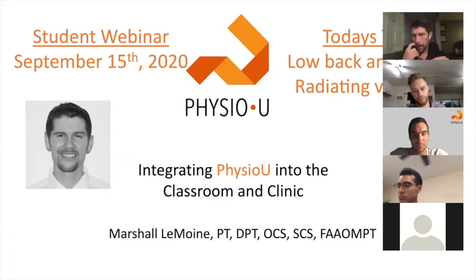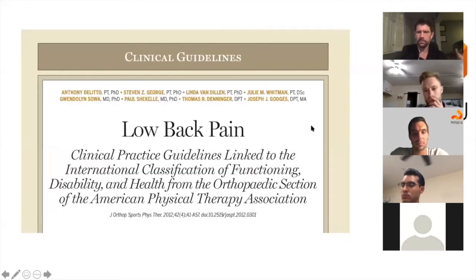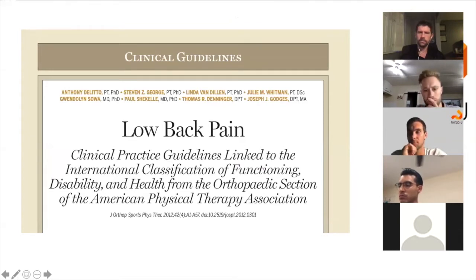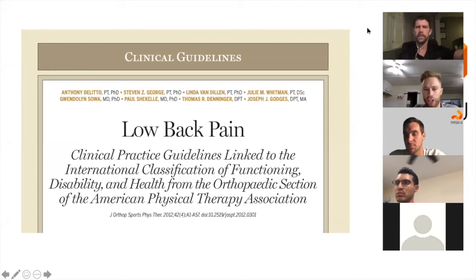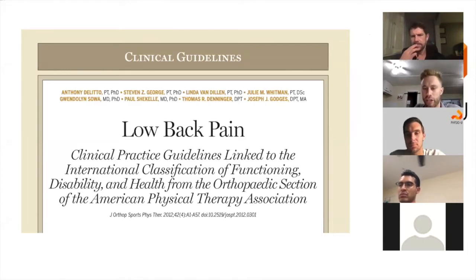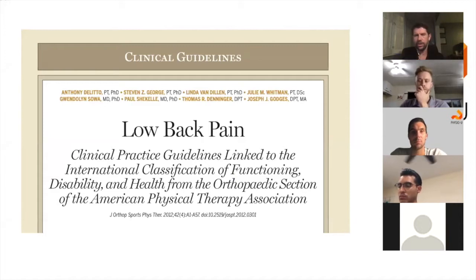What is the biggest difference between related leg pain and radiating leg pain? Radiating is coming from a nerve and follows a pattern. Referral is more broad and comes from another tissue. So the one big difference is nerve involvement. They both go down the leg, but radiating pain is coming from nerve tissue, while the other is more of a referred somatic referral and doesn't have anything to do with the nerve.